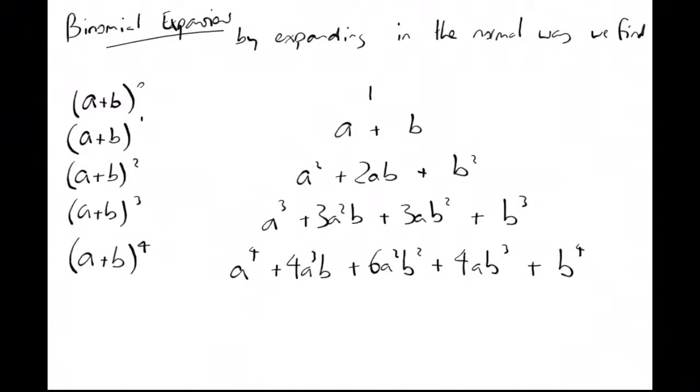If you notice there, the numbers on that last one, 1 4 6 4 1, were the same as the numbers we had on Pascal's triangle. The third row 1 3 3 1, 1 1, it's just Pascal's triangle. So these numbers in front of the letters, the coefficients, they're coming from Pascal's triangle.